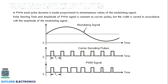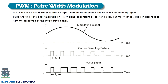Now let us look at PWM — pulse width modulation. In the previous case, pulse amplitude modulation, we varied the amplitude of the signal. In PWM, we again consider the amplitude of the modulating signal, and the carrier is also a train of pulses, but the width of the signal is going to be varied in the modulated signal.